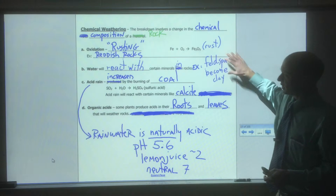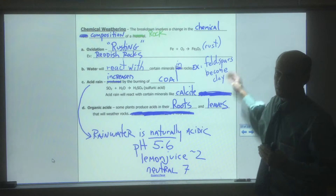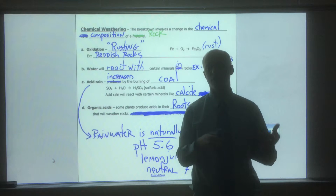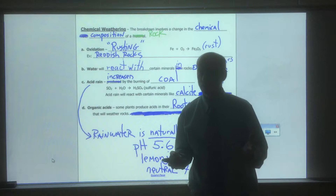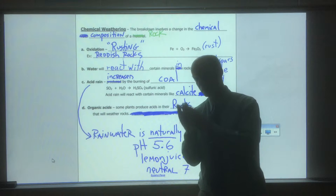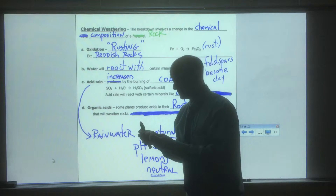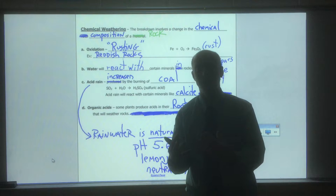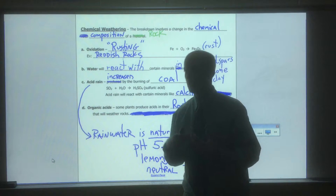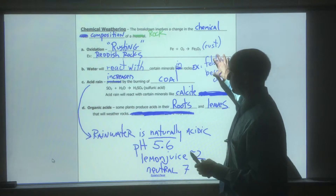Another process is that water will react with certain minerals in rocks. An example: feldspar will become clay. Feldspars react with water over time and convert into clay minerals. In the mineral labs we saw, clay minerals were too small to observe, but they're a big part of the mineral world. Igneous rocks contain potassium and plagioclase feldspar formed from magma and lava, and these react with water over many years to form clay.